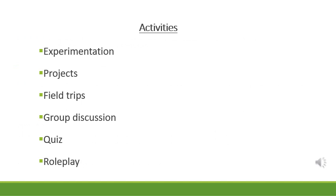Now we can see the different activities which can be given in the constructive approach for the English classroom: experimentation, projects, field trips, group discussion, quiz competitions, and role play. For experimentation, students are assigned tasks they think through, create, and experiment on their own, then present in front of the classroom after various attempts at home.